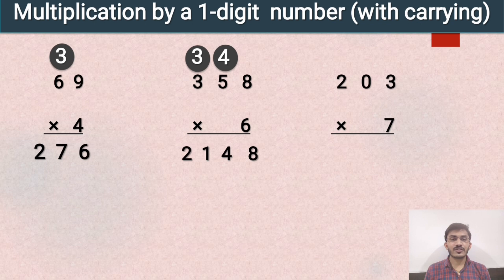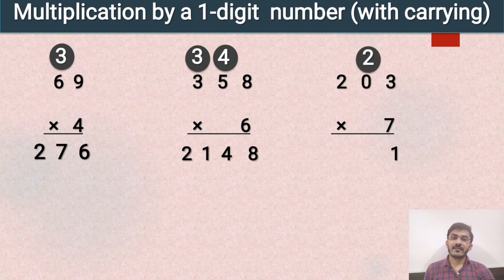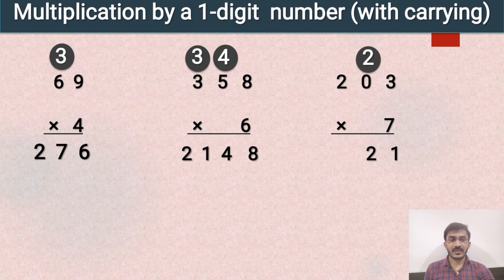Next example is 203 multiplied by 7. First of all we will multiply 7 with the ones place — 7 threes are 21. We write 1 at the ones place and carry 2 forward. Now, when we multiply any number with 0, the answer will be 0. So 7 zeros are 0, and 0 plus 2 is equal to 2. Now we will multiply 7 with the hundreds place. 7 twos are 14. So the final answer will be 1421.